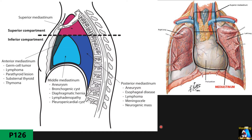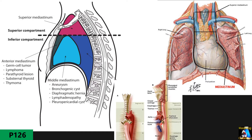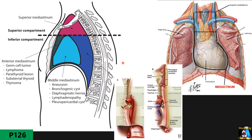In the posterior mediastinum, we have structures including the esophagus, thoracic descending aorta, trachea, and some vessels and nerves.